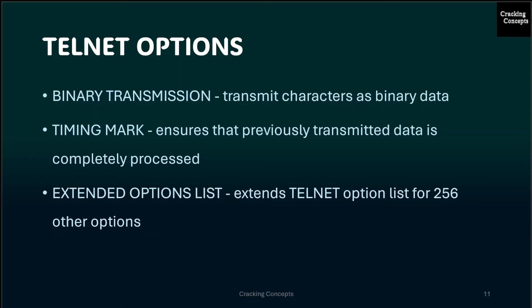Now we will see some of the Telnet options available, which are negotiated between the client and server. The first is binary transmission, used in TN3270 sessions — it will transmit characters as binary data. Next is timing mark, which is recognized but has a negative response; it ensures that previously transmitted data is completely processed. Then there is the extended options list, which will extend the Telnet option list for 256 other options. Without this option, Telnet only allows 256 options.